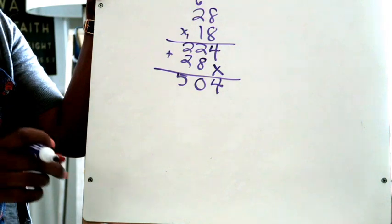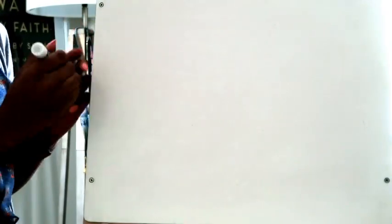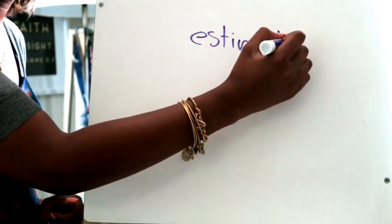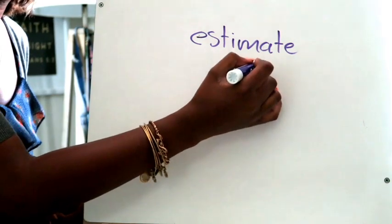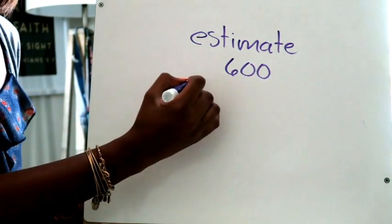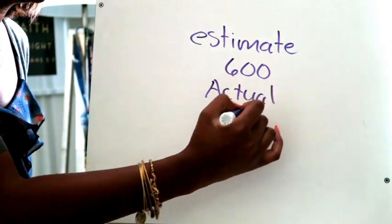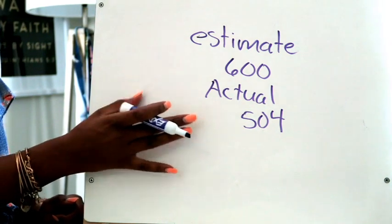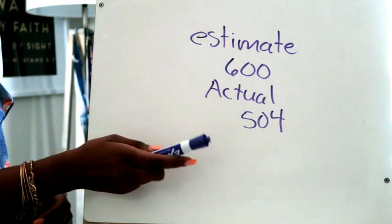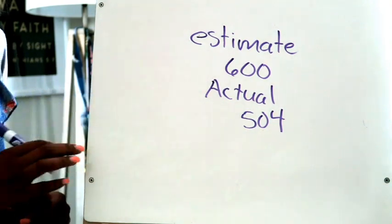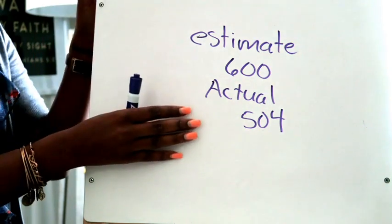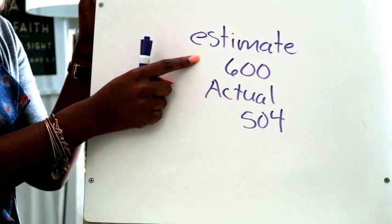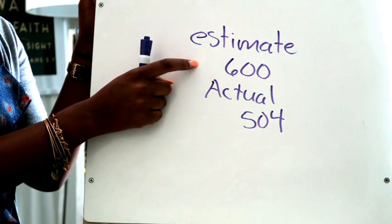So now that you have your partial products, the next thing you want to do is you want to go back to that estimated answer. So if you remember, our estimate said our answer should be somewhere around 600. Our actual answer was 504. Now this is where you got to really just trust yourself that you did the math correctly, because some of you may think, well, 504 is not that close to 600. But it is relatively close. It is close enough for you to feel like, okay, I took my time, I checked my work, this is the answer that I got, it's relatively close to my estimated answer, so chances are I'm correct. Now if this was a number like 200 or 1000, then you should know for sure that that's pretty far off from 600.